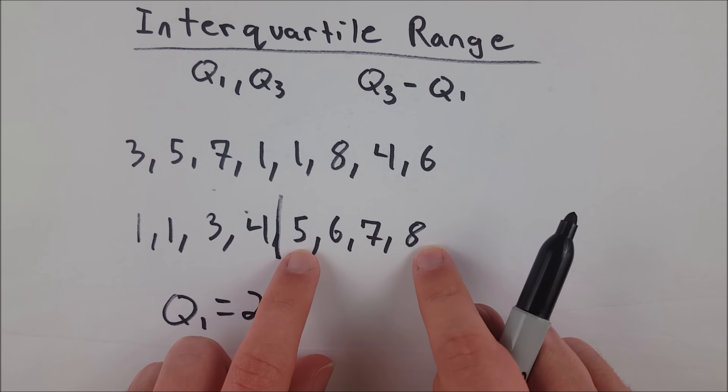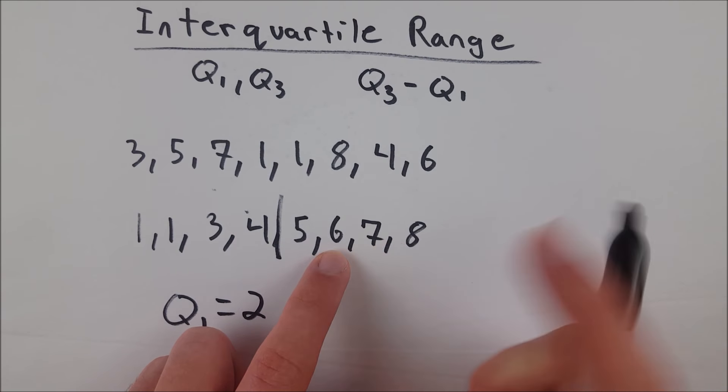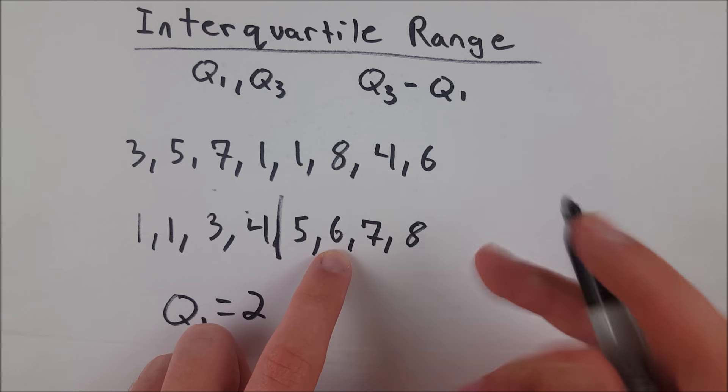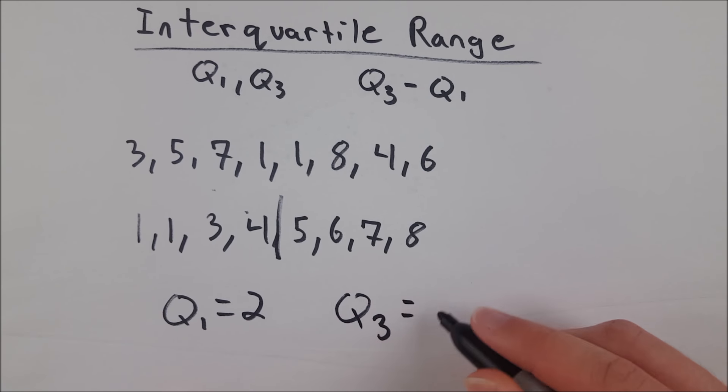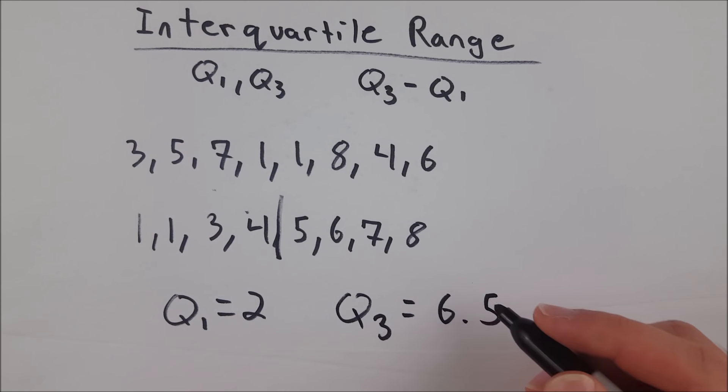And then over here, go in one, go in two. The third quartile is halfway between six and seven, because that's the median of the upper half of data. So the third quartile is equal to 6.5.